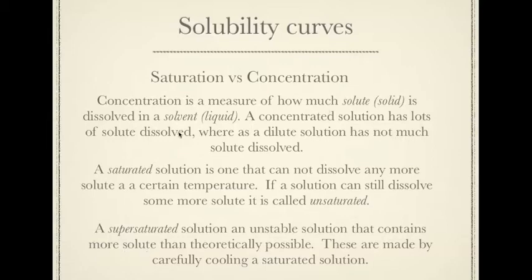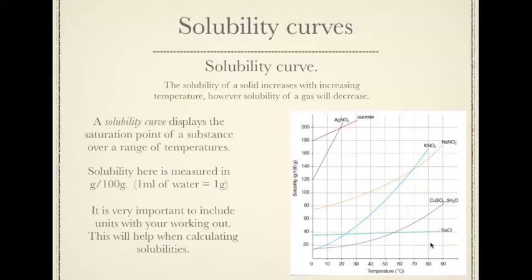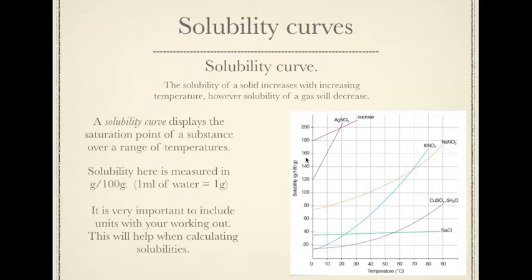Let's look at solubility curves. A solubility curve shows you the change in solubility at different temperatures. The fundamental idea is that the solubility of solids increases when you increase the temperature, while the solubility of gases decreases when you increase the temperature. The y-axis is solubility in grams per 100 grams of water — also known as grams per 100 mL, since 1 mL equals 1 gram. The x-axis is temperature.